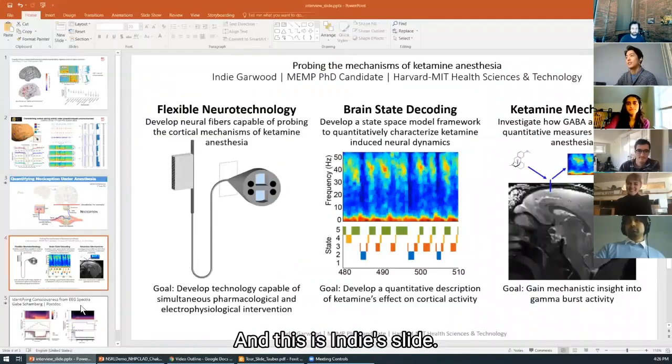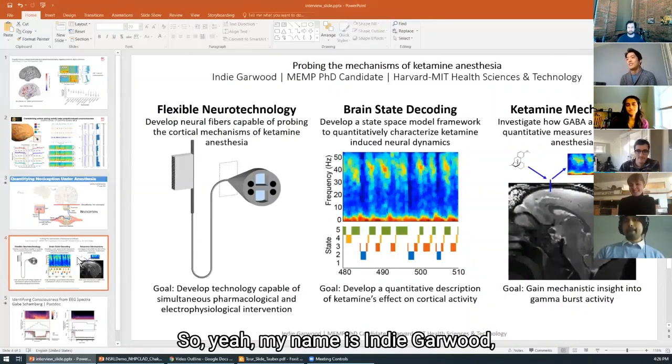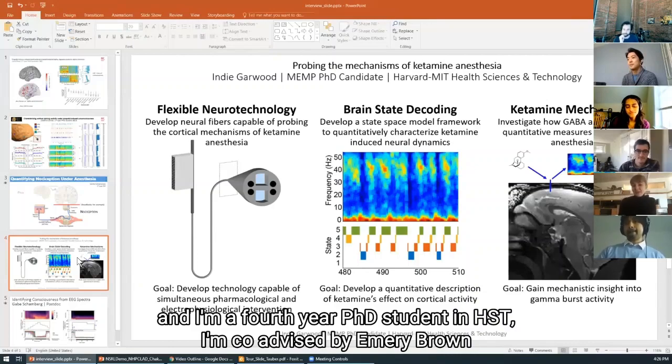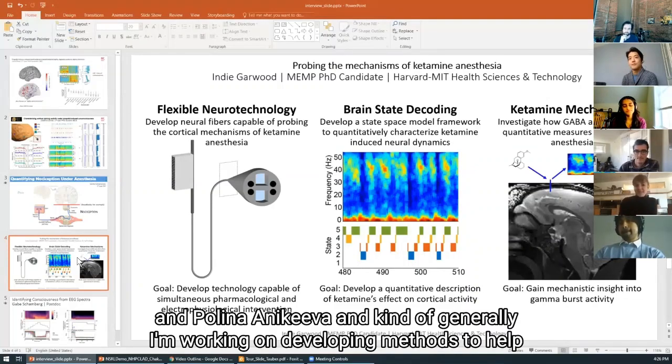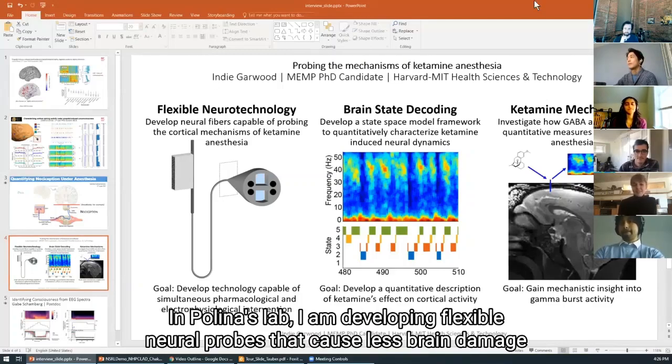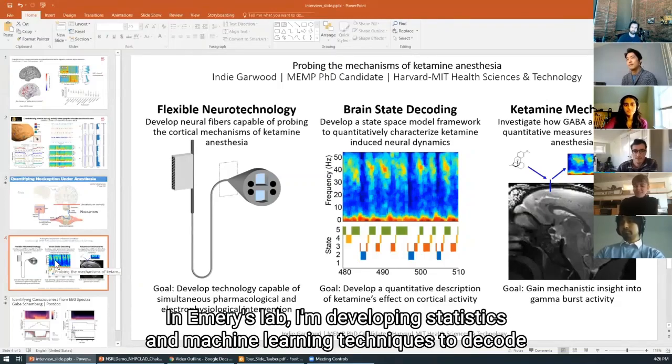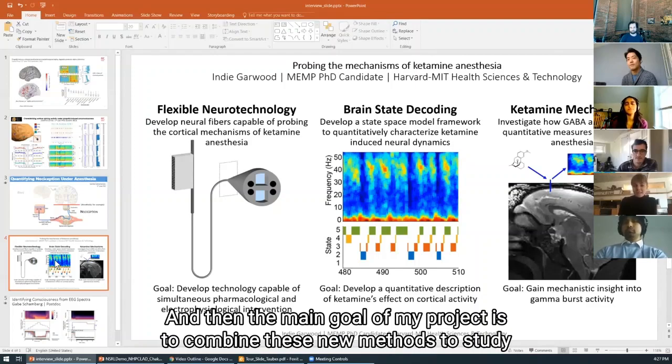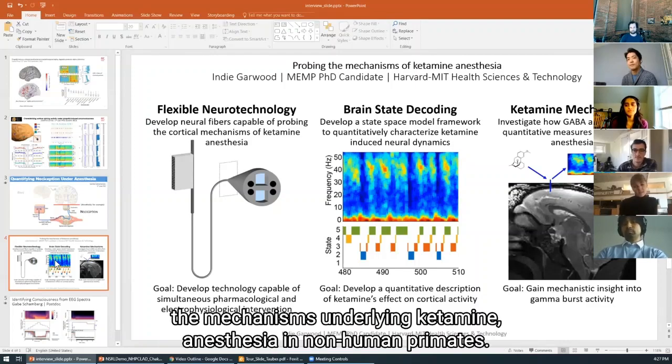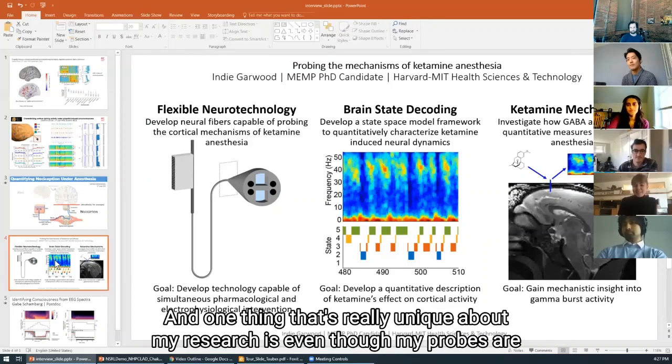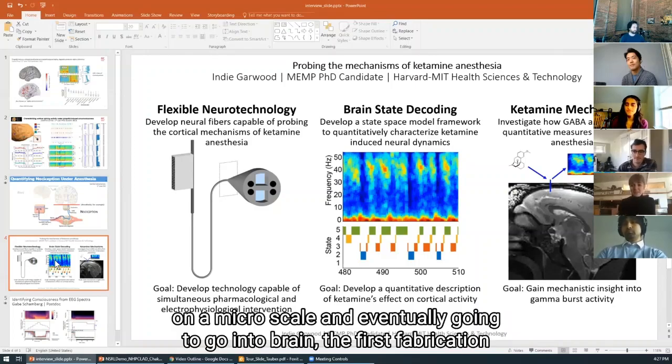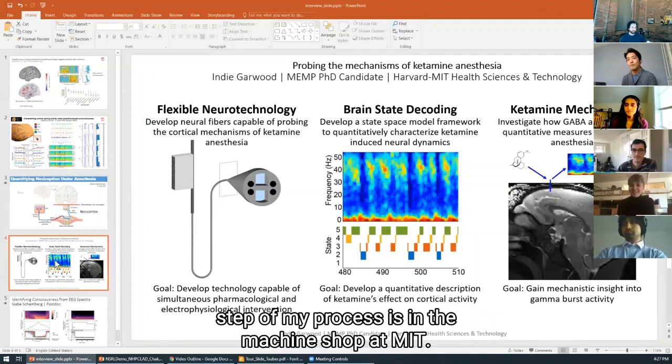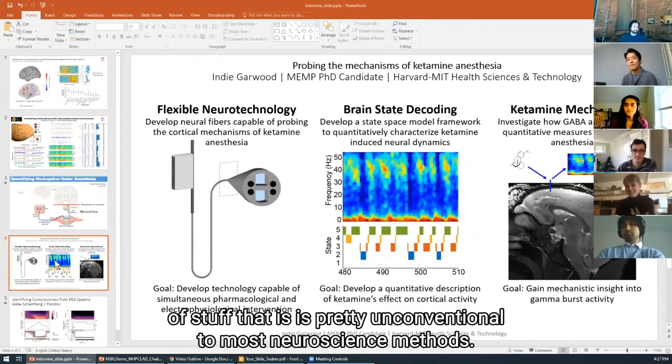So, next we have Indy. Thanks, David. So yeah, my name is Indy Garwood, and I am a fourth year PhD student in HST. I'm co-advised by Emory Brown and Paulina Anakiba. And kind of generally, I'm working on developing methods to help us better understand and interact with the brain. In Paulina's lab, I'm developing flexible neural probes that cause less brain damage than probes that are currently on the market. In Emory's lab, I'm developing statistics and machine learning techniques to decode the brain states that occur under ketamine anesthesia. And then the main goal of my project is to combine these new methods to study the mechanisms underlying ketamine anesthesia in non-human primates. And one thing that's really unique about my research is even though my probes are on a micro scale and eventually going to go into brain, the first fabrication step of my process is in the machine shop at MIT. So I get to really be using the lathe and all of that kind of stuff that is pretty unconventional to most neuroscience methods.